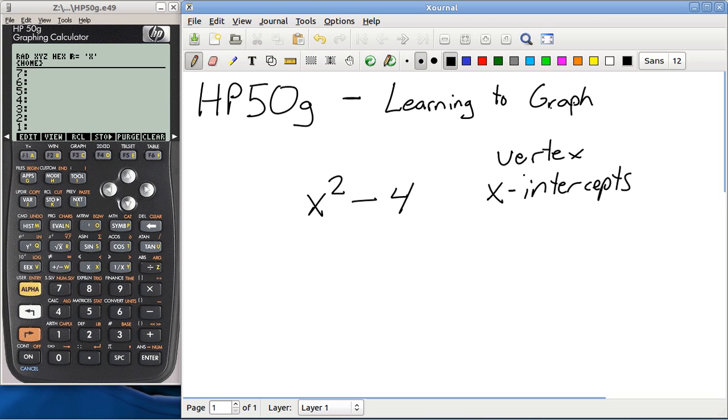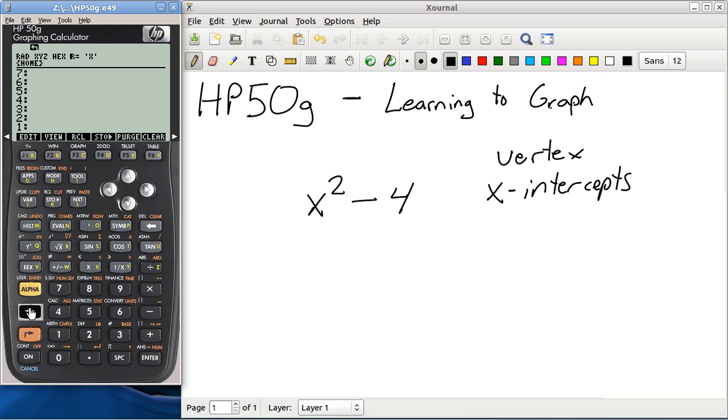So to do that, if you're at your home screen, if you're in RPN mode, this is critical. If you just hit the white left shift and then hit y equals, nothing's going to happen. You've got to press and hold the white key and then come up and hit your y equals, F1. This will bring up the plot function window.